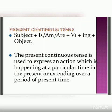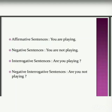Present continuous tense is used to describe an action that is happening right now, or an action that is going to take place in the near future. For example: 'They are waiting for us at the restaurant,' 'I am coming to your place,' 'She is singing in the concert.'